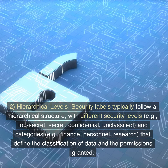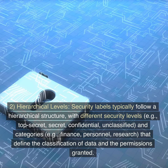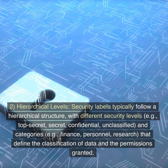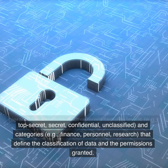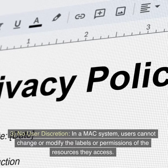2. Hierarchical Levels — Security labels typically follow a hierarchical structure, with different security levels, e.g., Top Secret, Secret, Confidential, Unclassified, and categories, e.g., Finance, Personnel, Research, that define the classification of data and the permissions granted.